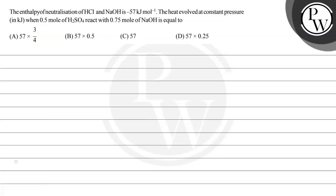Let's read this question. The enthalpy of neutralization of HCl and NaOH is minus 57 kilojoule per mole. The heat evolved at constant pressure in kilojoules when 0.5 moles of H₂SO₄ react with 0.75 moles of NaOH is equal to — we have four options, and to solve this question the key concept we need to use is heat of neutralization.